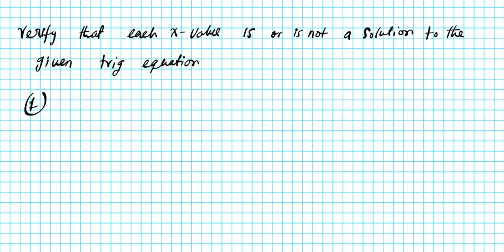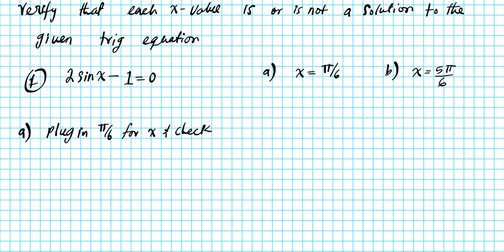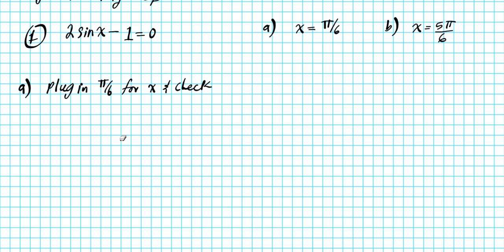For number one, we have the trig equation 2 sine x minus 1 equals 0. We're given two x-values — pi over 6 and 5 pi over 6 — and we need to determine if these are solutions. If you're given an equation and asked if a particular x-value is a solution, you plug in and check. If we get a true statement, it is a solution; if not, it isn't.